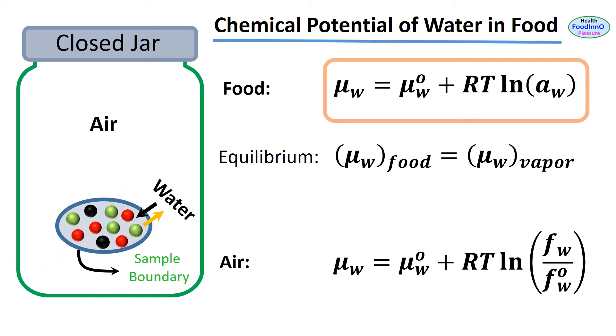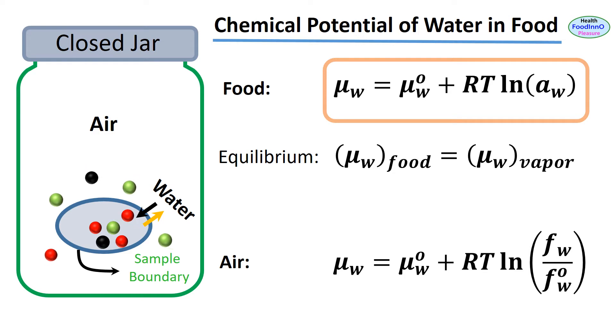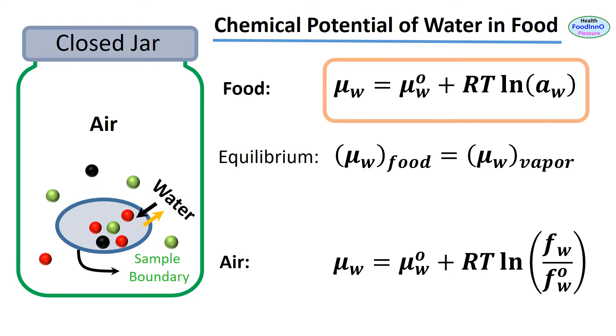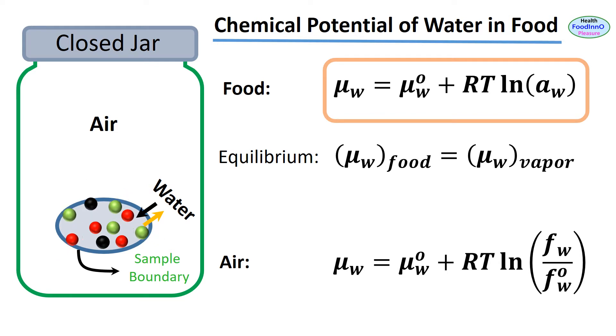μw° is the chemical potential of pure water at temperature T, R is the gas constant, and Aw is the water activity of a food.